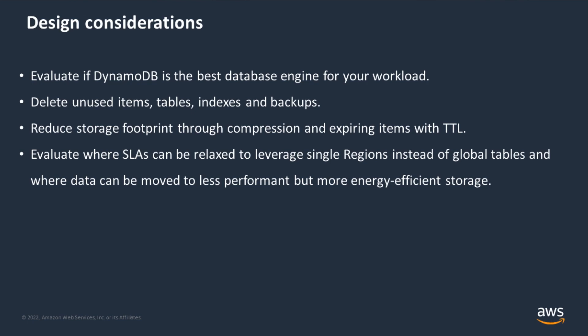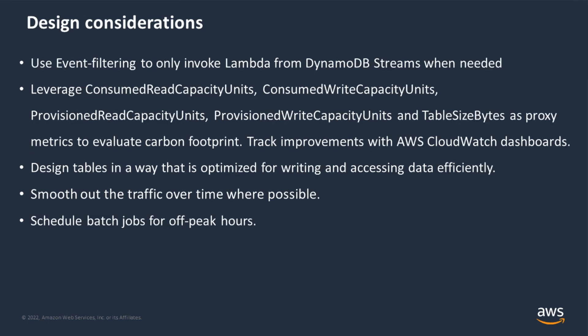We also want to be sustainable by cleaning up unused resources and evaluating where SLAs can be relaxed. For certain workloads, we can be happy using a single region. For others, global tables may be needed. If we're using AWS Lambda to read from DynamoDB streams, which is a fairly common design pattern, we can now utilize Lambda event filtering to only invoke Lambda functions when we have a pattern match on the payload. Fewer invocations of Lambda means less compute used, which means better efficiency.